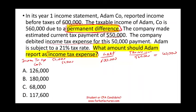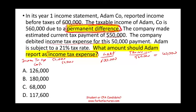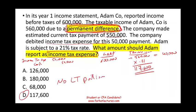If you understand the concept, you can answer this in 30 seconds to a minute. Since the differences are permanent, there is no deferred portion. Therefore, income tax expense is simply taxable income times the tax rate: $560,000 × 21% = $117,600. You have no deferred tax asset or deferred tax liability here because a permanent difference never reverses.